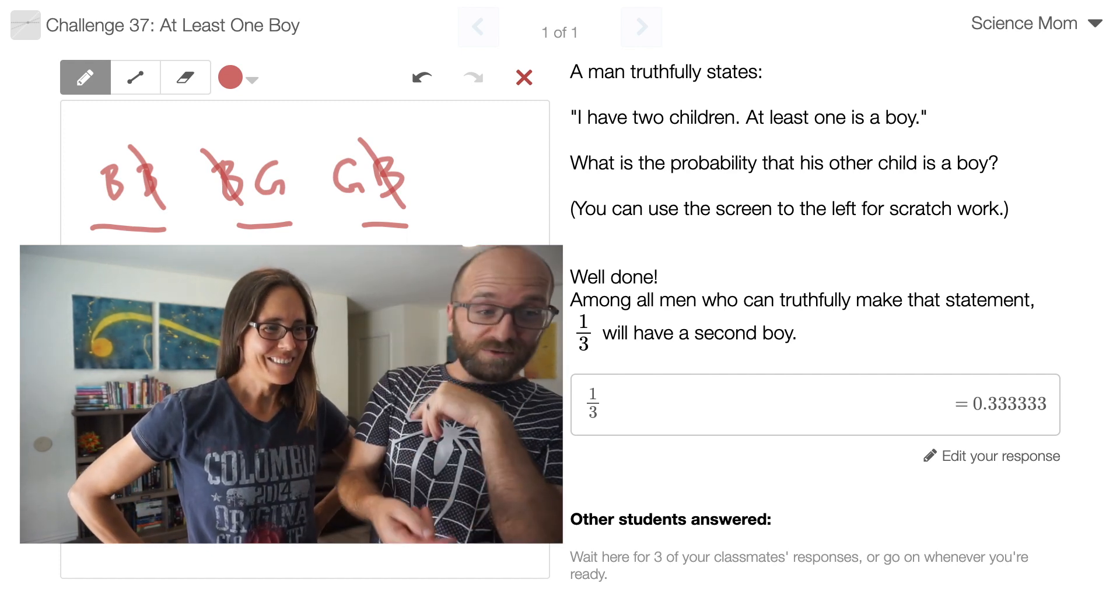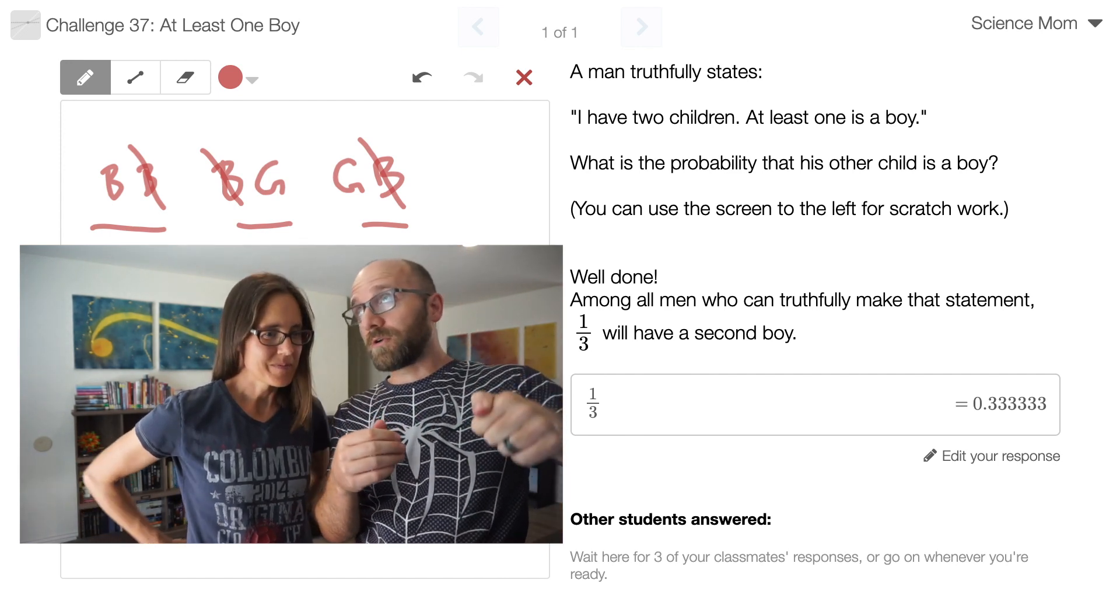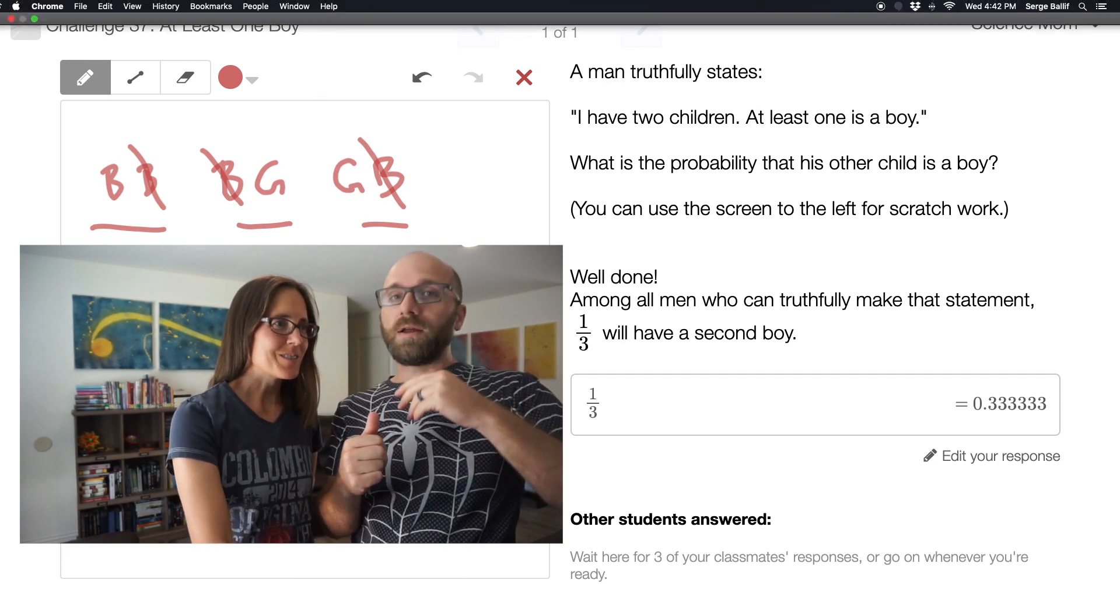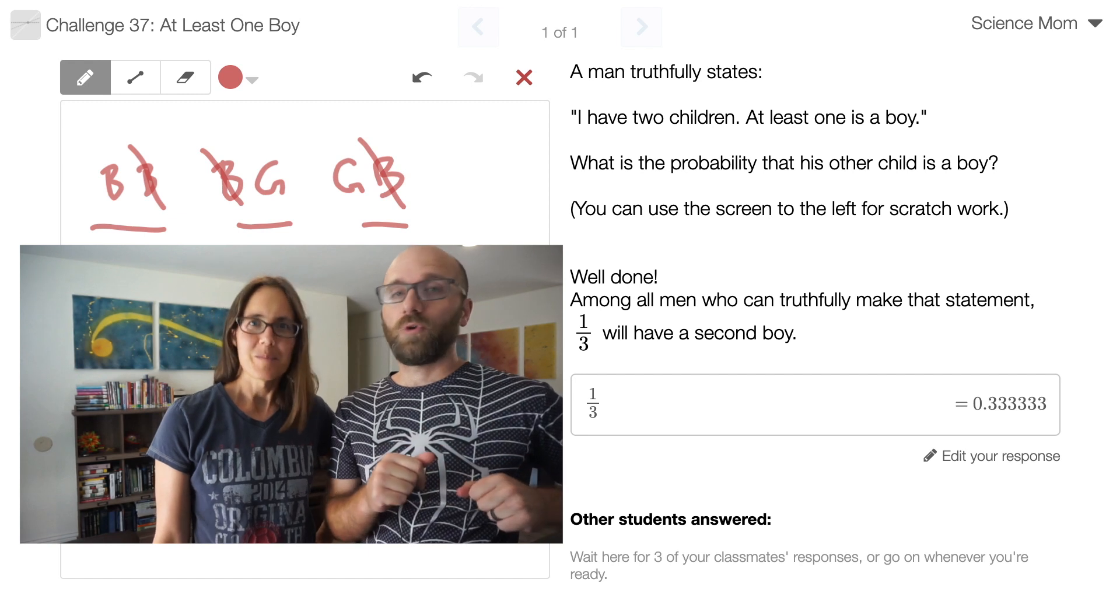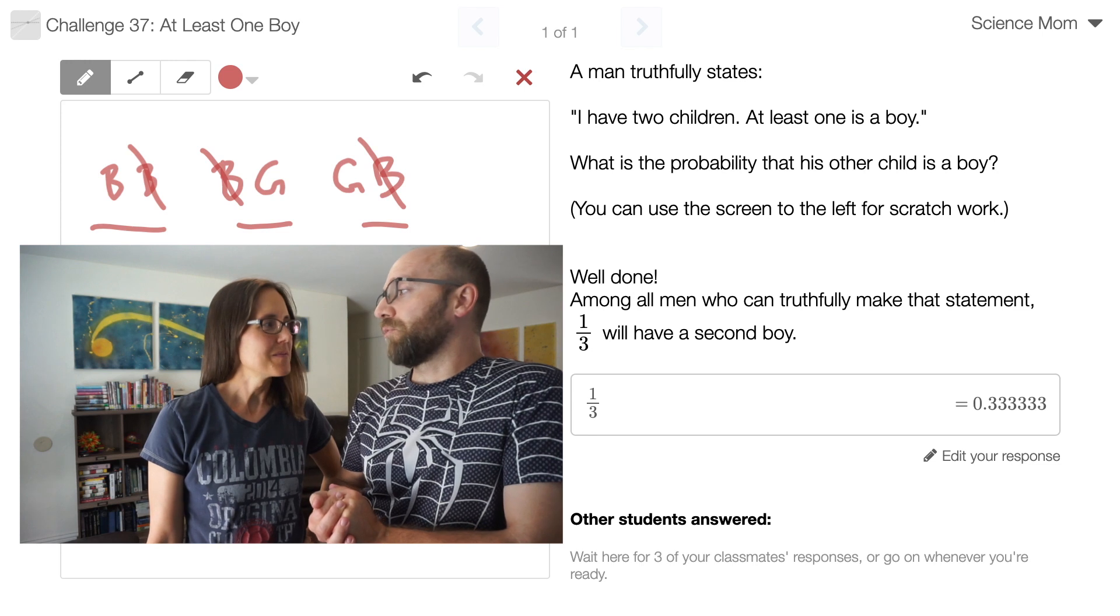But yeah, you definitely reasoned it right the second time here. There were four equally likely possibilities. You could have boy-boy, boy-girl, girl-boy, girl-girl. Oh, there's our timer. But you could eliminate the girl-girl option because at least one is a boy, leaving only three possibilities. Only one of those three has a second boy.